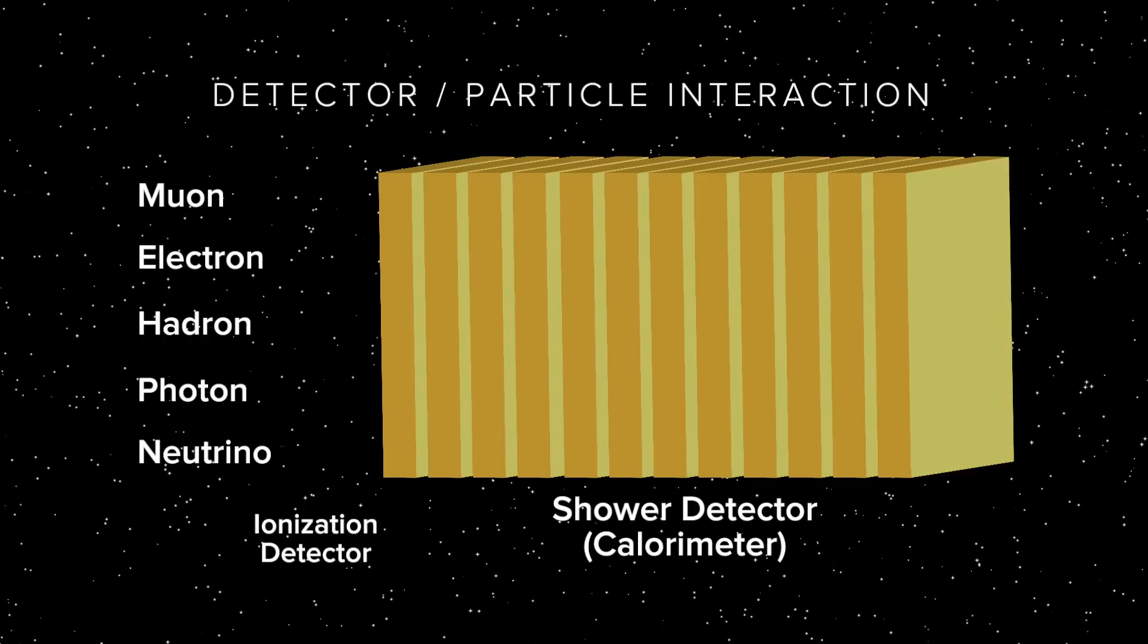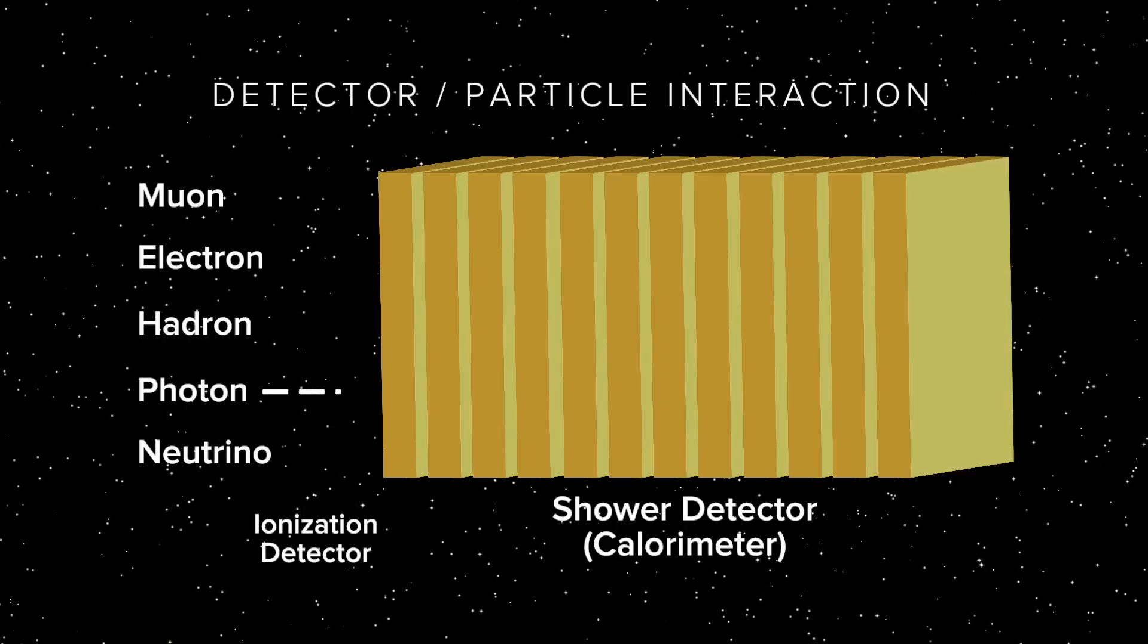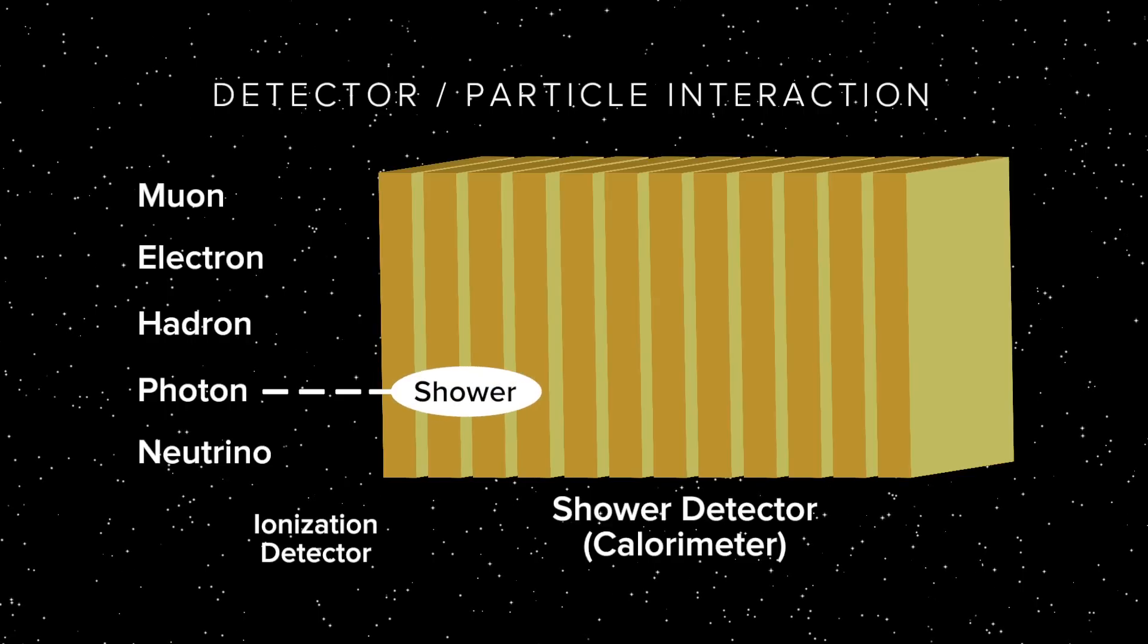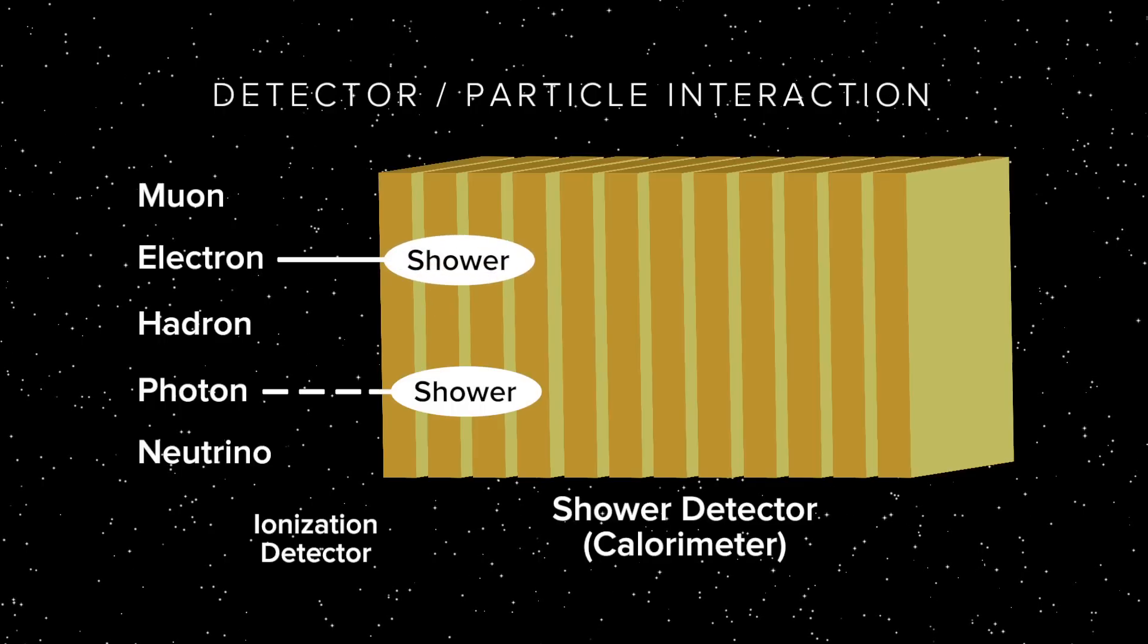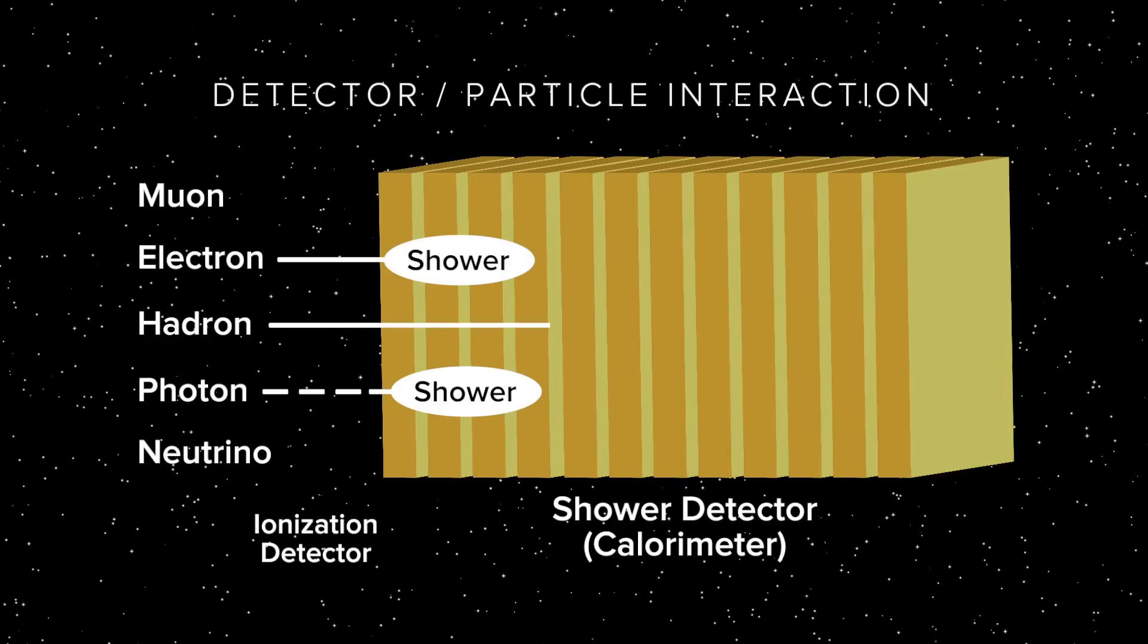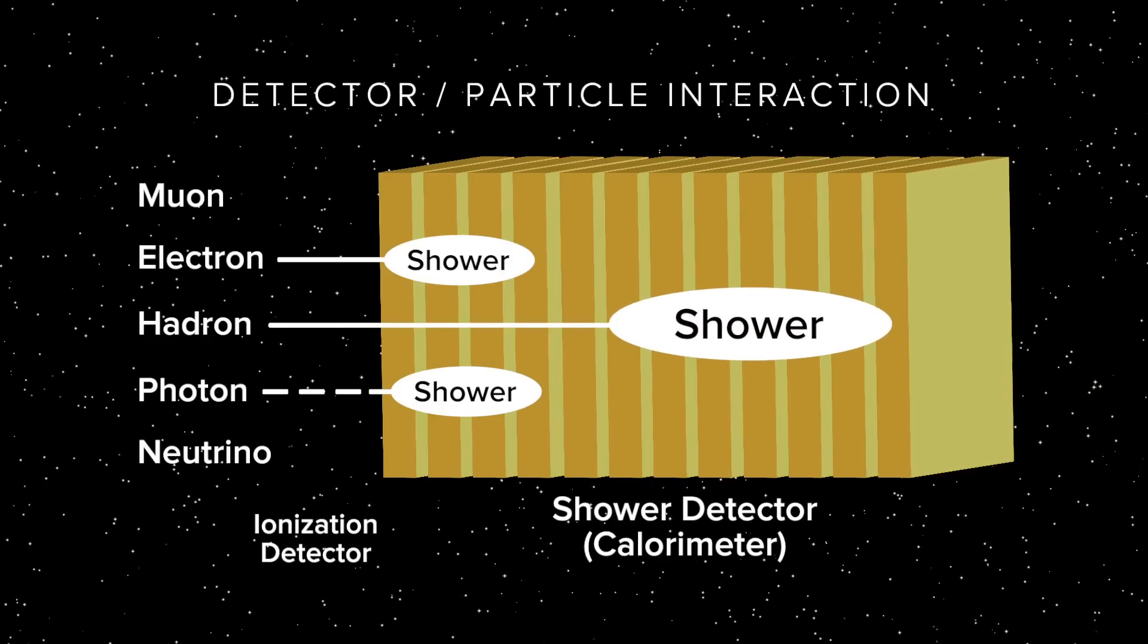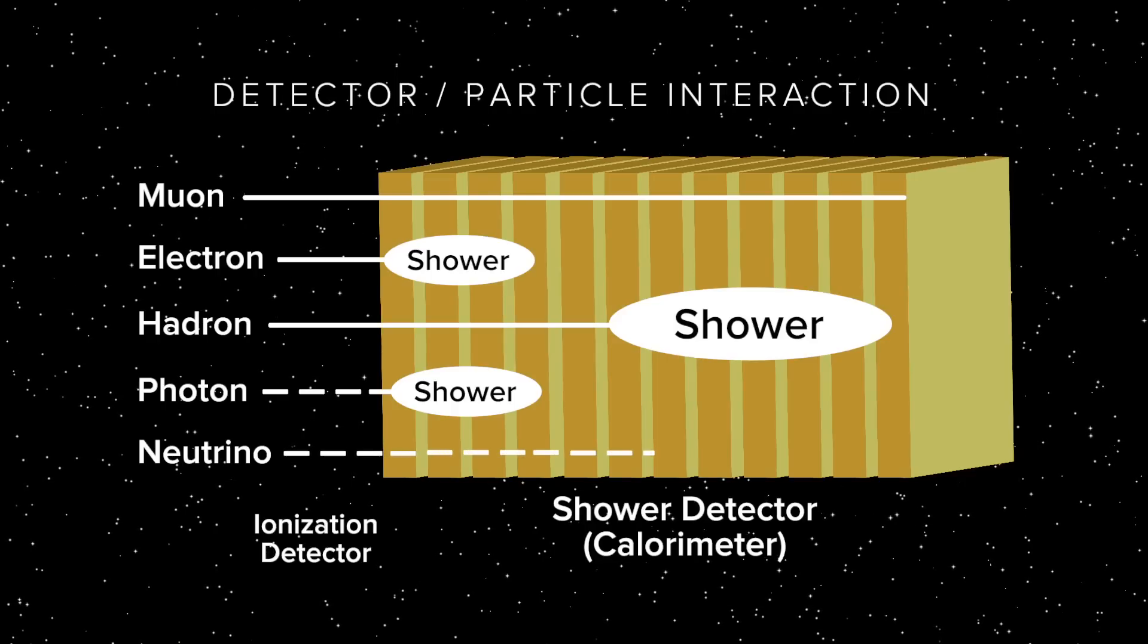This table shows us how the different particles interact in matter. Photons don't ionize, but make short showers. Electrons both ionize and make short showers. Neutral hadrons don't ionize and make long showers, while the charged ones both ionize and make long showers. Muons ionize, but don't make showers. And neutrinos neither ionize nor shower.